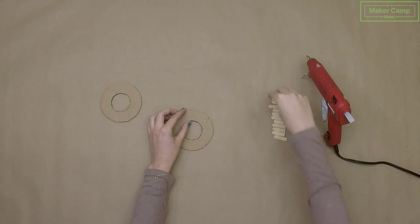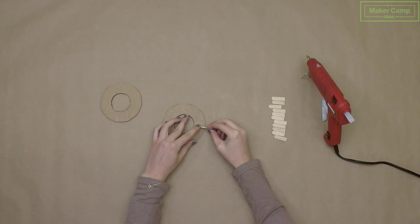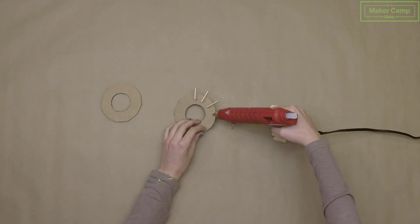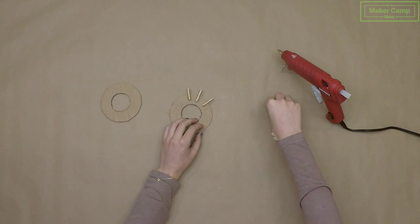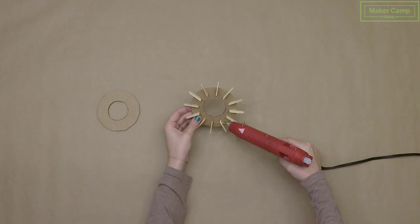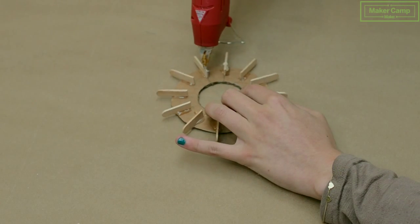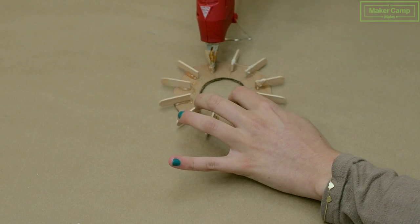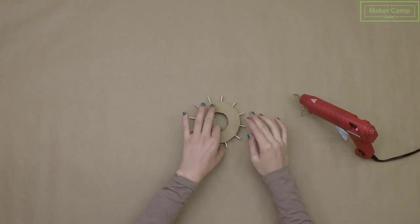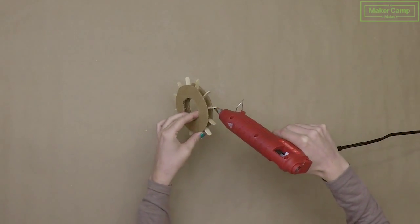Glue each half craft stick onto the dividing lines that you drew onto one of the disks. Half of the craft stick should be sticking out past the cardboard disk. Make sure that the edge of each craft stick is perpendicular to the disk. Reinforce the bonds with more hot glue. Apply hot glue to the top edges of each craft stick and place the other cardboard disk on top of the glue. Reinforce the bonds again.